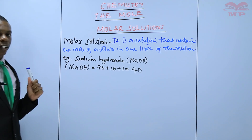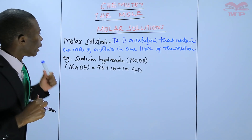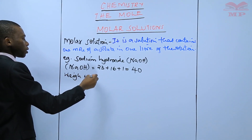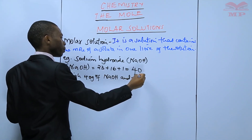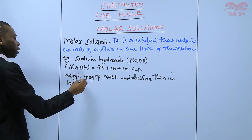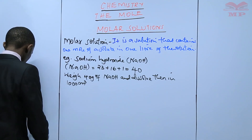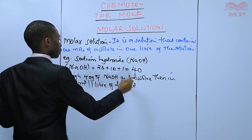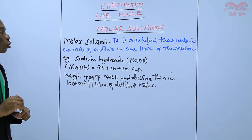Therefore, if you want to prepare a molar solution of sodium hydroxide, you will have to measure or weigh 40 grams of sodium hydroxide and dissolve them in 1000 centimeters cubed — that is one liter — of distilled water. That will be 1 molar sodium hydroxide.